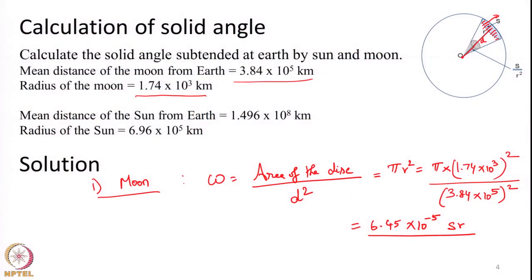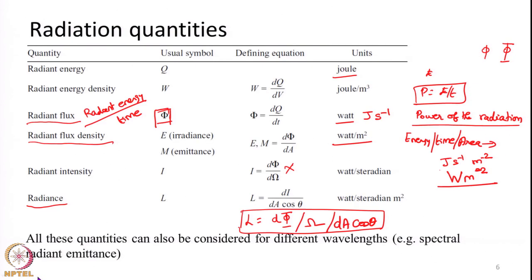As a recap, in the last class we defined what a plane angle is and what a solid angle is. We did a small problem calculating the solid angle subtended by the sun and moon on the Earth's surface. Then we defined various radiometric quantities: radiant energy, radiant flux (energy per unit time), and radiant flux density (energy per unit time per unit area). If that radiant flux density is coming towards an object we call it irradiance; if the object is emitting energy we call it emittance.